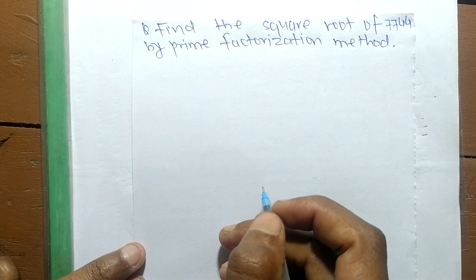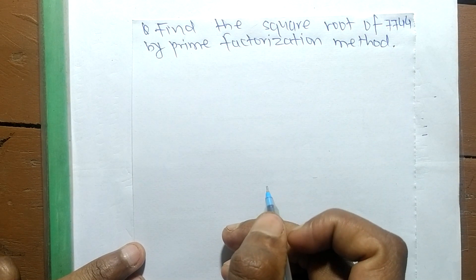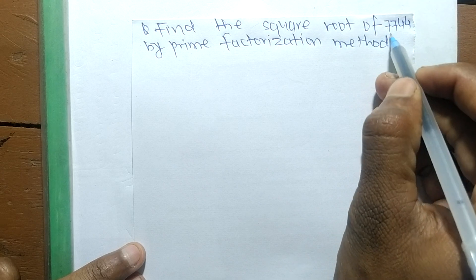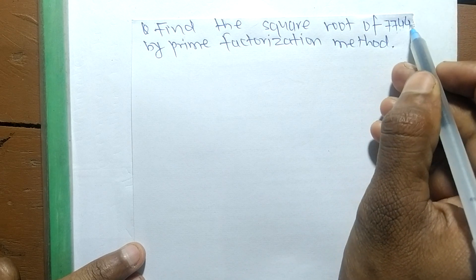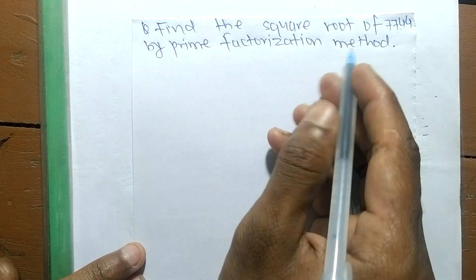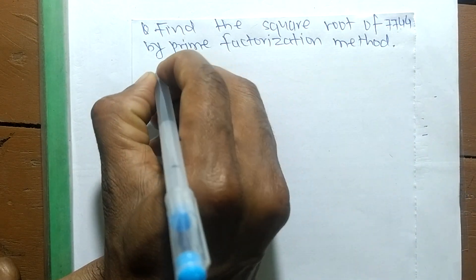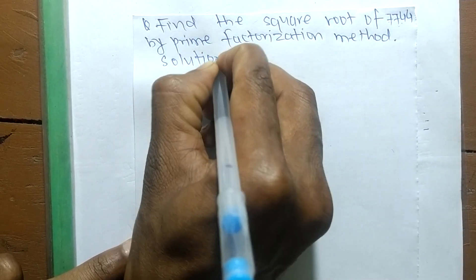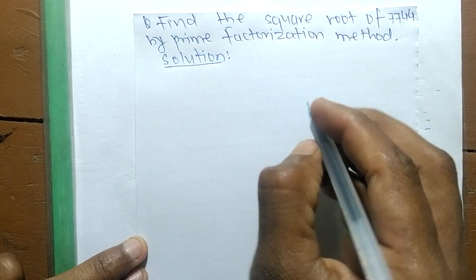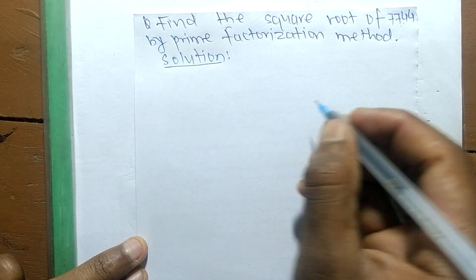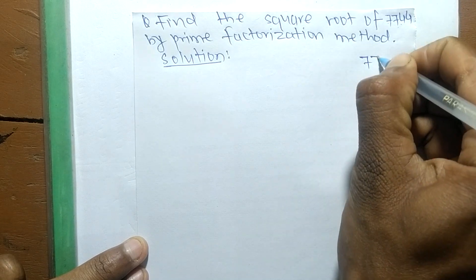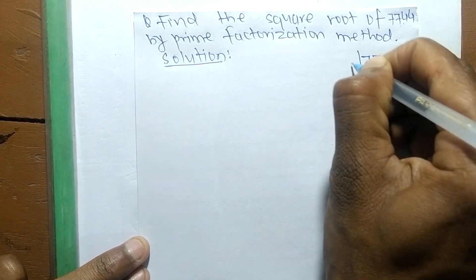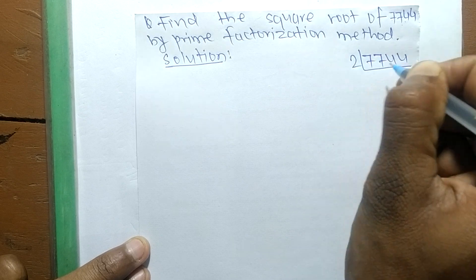Today in this video we shall learn to find the square root of 7744 by the prime factorization method. For the solution of this problem, first we find out the prime factors of 7744. It is divisible by 2.